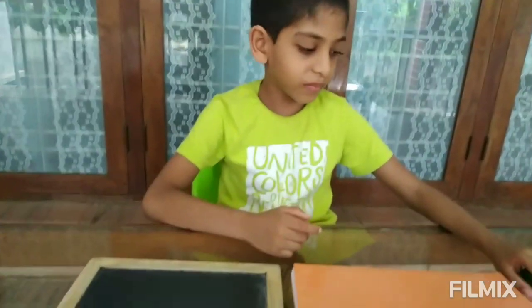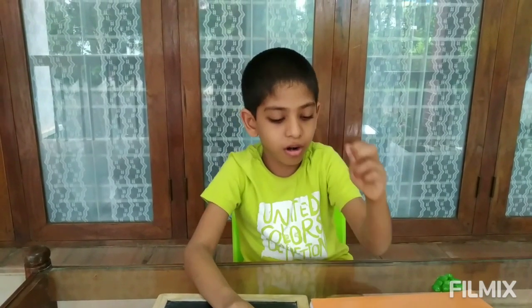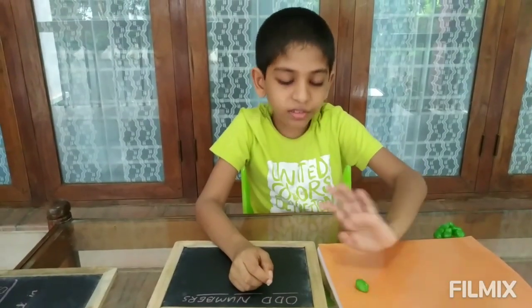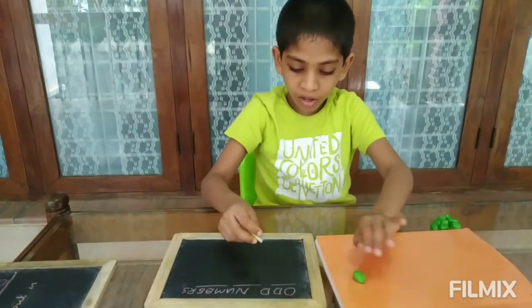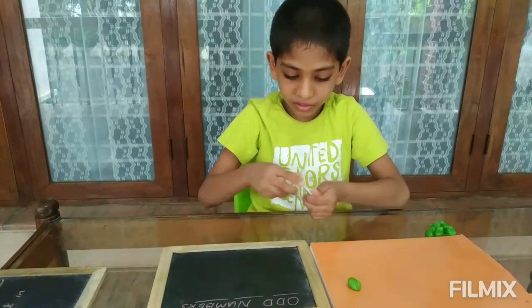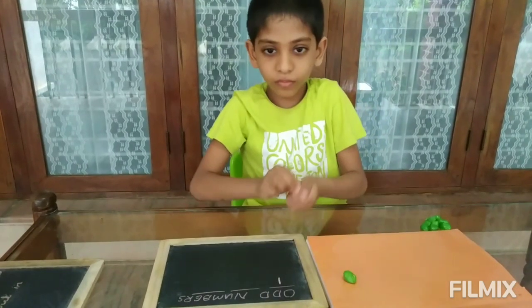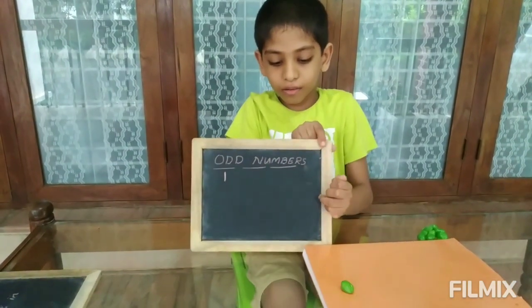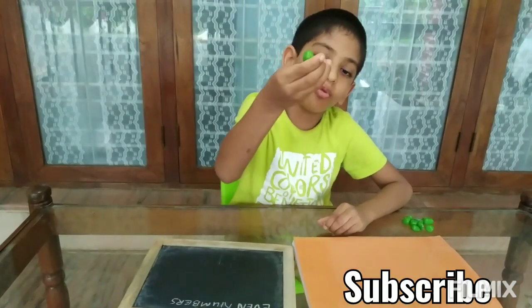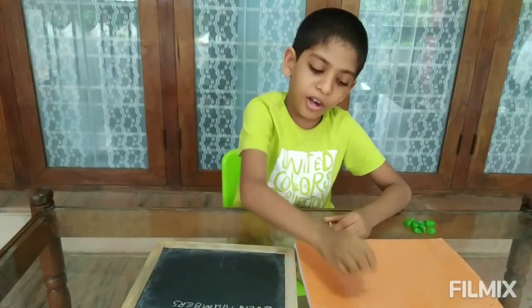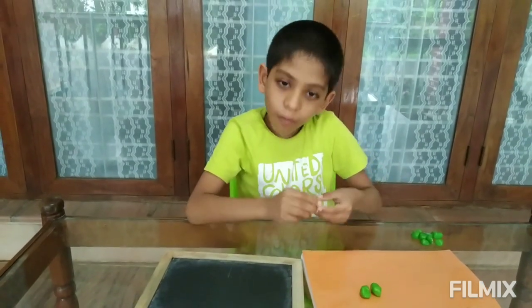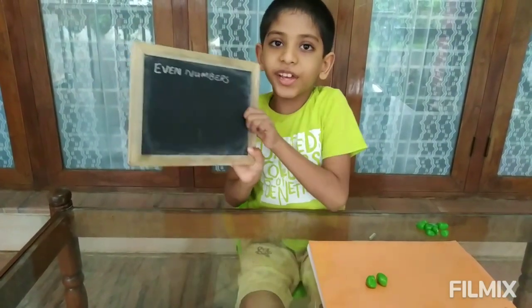I am going to show what is an even number and an odd number. I take one marble. It is not in pairs, so it is an odd number. I take two marbles. They are in pairs, so two is an even number.